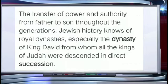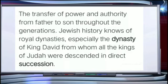The second challenge is dynastic succession. The top positions in many political parties are generally controlled by members of one family. Leaders at the top have an unfair chance of favoring their families and friends. This is bad for democracy since people who do not have adequate experience or popular support come to occupy positions of power. This tendency is present to some measure all over the world, including in some of the older democracies. The transfer of power and authority from father to son throughout the generations is known as dynastic succession — for example, the dynasty of King David, from whom all the kings of Judah were descended in direct succession.